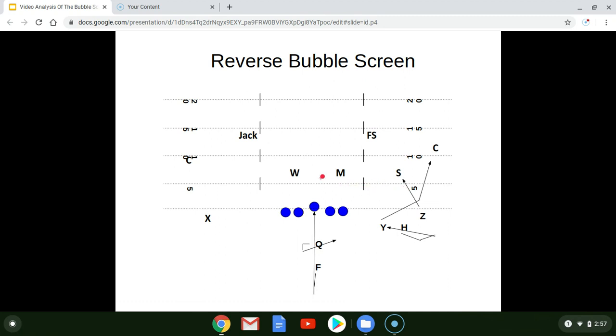Once again, we're forcing the mic and the wheel and all these defenders in the box to gap out to the run play. We have forced the Sam to hop over Z's block. So now when the Z cracks down, blocks down on the Sam, the Sam hops over his block because that's the Sam's gap. Now the Z will simply turn and pin him on the numbers.